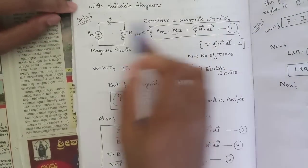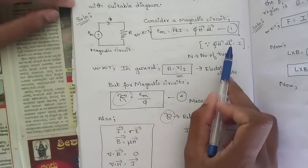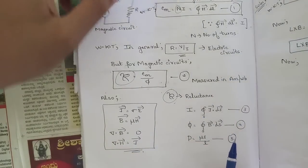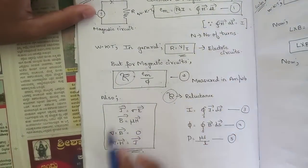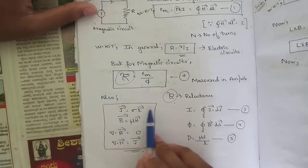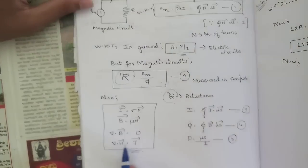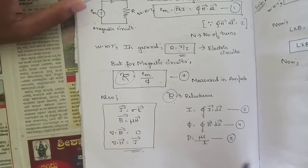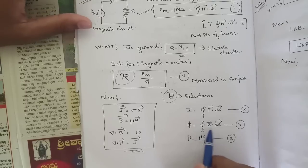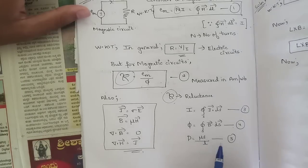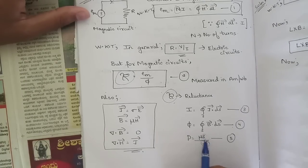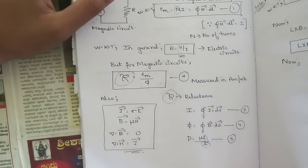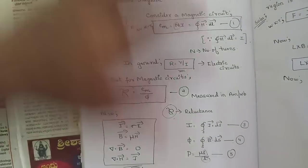Key equations for magnetic circuits: J = σE, B = μH, ∇·B = 0, ∇·H = J, I = ∯J · dS (where J is current density), φ = ∯B · dS, and reluctance R = l/(μS), where l is length and S is the cross-sectional area of the magnetic circuit.